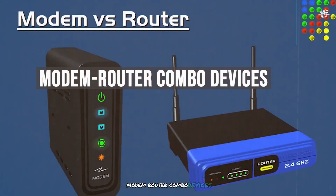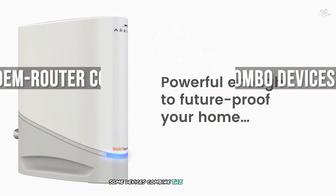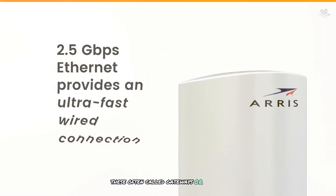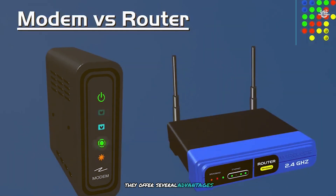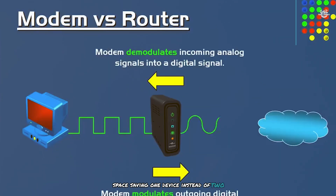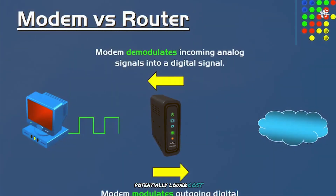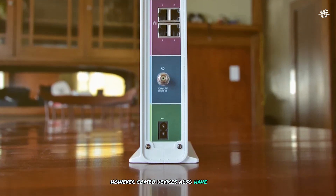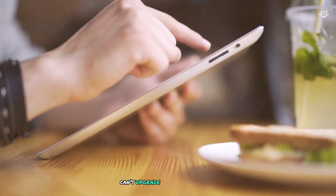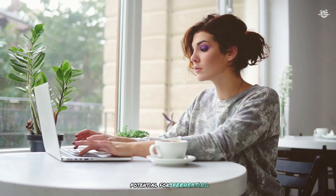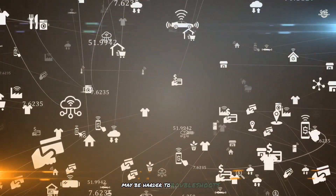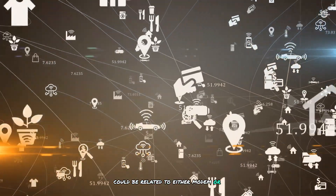Some devices combine the functions of a modem and router into a single unit, often called gateways or modem-router combos. They offer several advantages: space saving (one device instead of two), simplified setup, and potentially lower cost. However, combo devices also have drawbacks: less flexibility since you can't upgrade modem and router separately, potential for overheating due to more functions in one device, and they may be harder to troubleshoot since issues could relate to either modem or router functions.